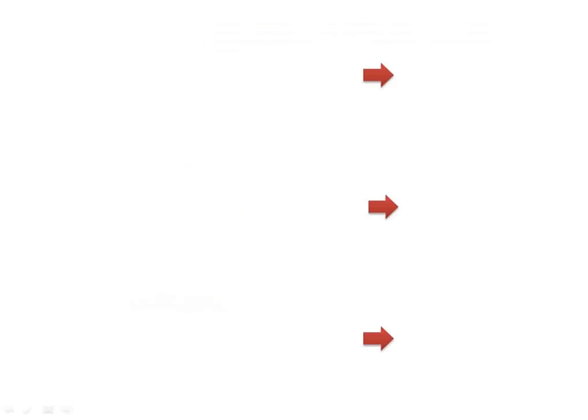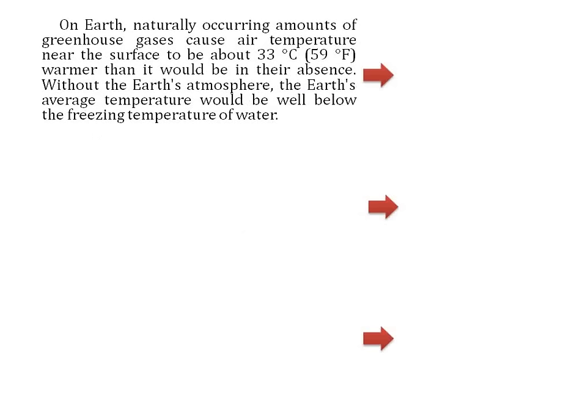For example, the first subsection states: on Earth, naturally occurring amounts of greenhouse gases cause air temperature near the surface to be about 33 degrees centigrade warmer than it would be in their absence. Without the Earth's atmosphere, the Earth's average temperature would be well below the freezing temperature of water. So in this first subsection, the author is talking about greenhouse gases and their importance.